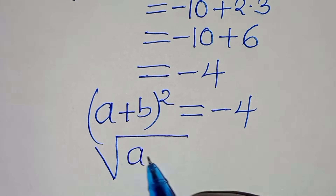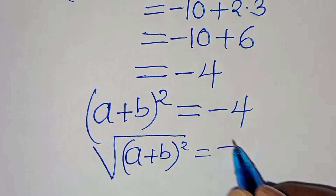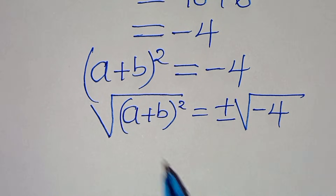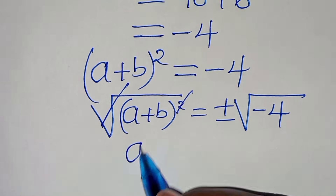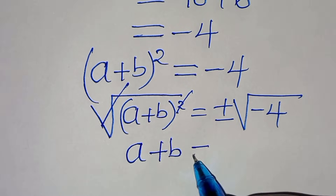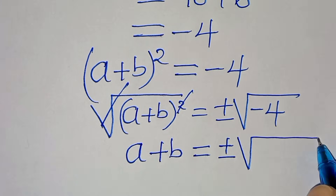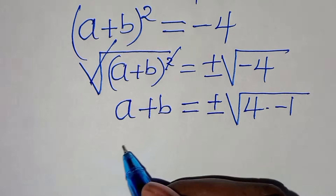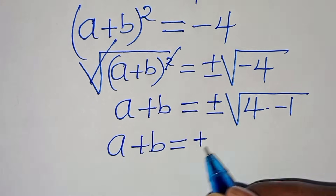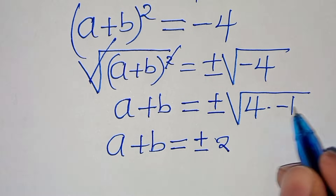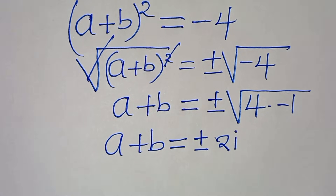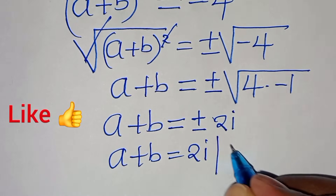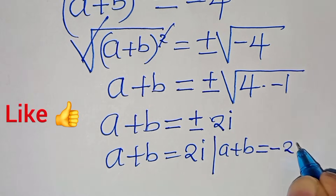To solve for a plus b, we take the square root of both sides: square root of (a plus b) squared equals plus or minus the square root of minus 4. We can write minus 4 as 4 times minus 1, so this equals plus or minus the square root of 4 times the square root of minus 1, which is i. Therefore a plus b equals plus or minus 2i.